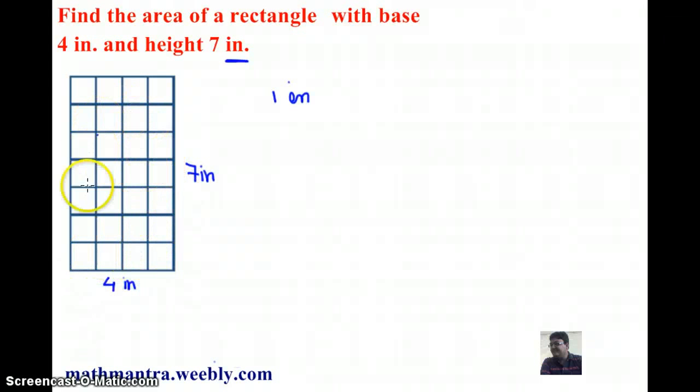Clearly I have 4 squares here and 7 squares here, so the total number of squares that I have will give me the area of the rectangle, and that will be equal to 28 because there are 28 squares. So the area is 28 square inches.